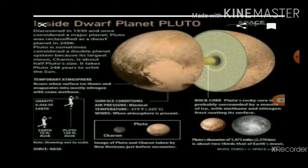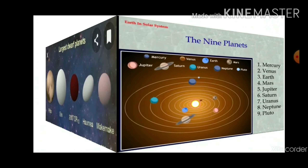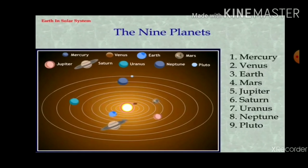Until recently, as of August 2006, Pluto was considered a planet. However, in a meeting of the International Astronomical Union, a decision was taken that Pluto — like other celestial objects such as 2003 UB, discovered in the recent past — may be called a dwarf planet. The largest dwarf planets include Pluto, Eris, 2007 OR10, Haumea, and Makemake.